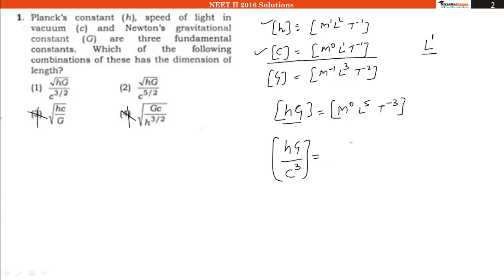If I use hG divided by c cubed, the dimensions will be m0, l2, and t0. What we need is m0 l1 t0, so we have to take a square root, which gives us square root of hG divided by c cubed, or root hG divided by c raised to power 3/2, which is our option number A. Clear?